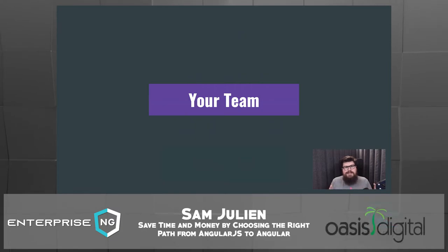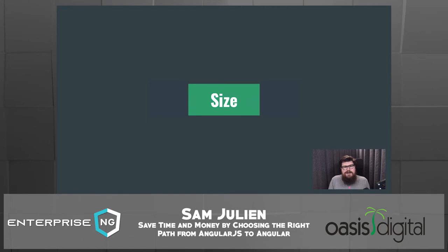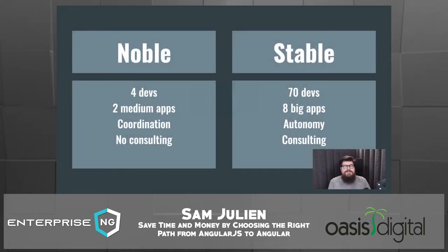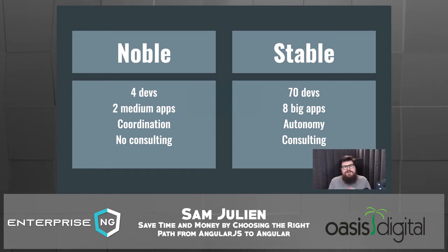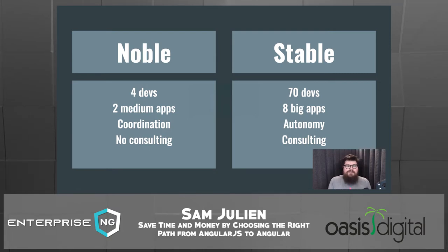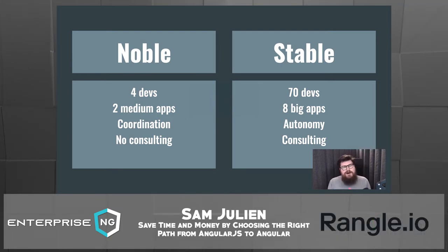Now let's look at helping Noble Nonprofit and Stable Insurance by examining the dimension of their team. It might seem counterintuitive to start with a non-technical thing, but it makes sense when you think about the time and resources a large-scale refactor takes. The first thing to look at is the size of the team, both short-term and long-term. Noble Nonprofit has four developers working on two mid-size applications — mid-size usually means around 50 to 200 components and services.